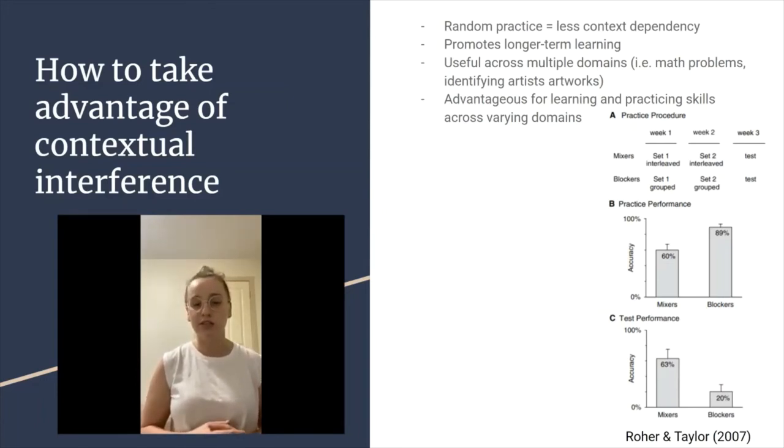Contextual interference is advantageous for many key reasons. Random practice leads to less context dependency, in which those who use random practice could do both blocked and random testing successfully. However, those who only learn blocked practice could only successfully complete the blocked tests. Overall, using random practice as a learning mechanism promotes more learning and the ability to apply these learnings in different contexts.